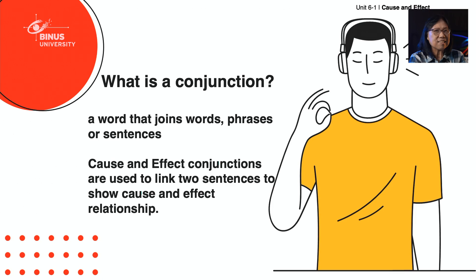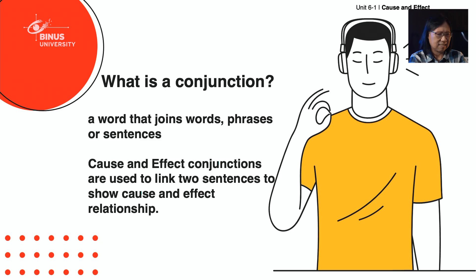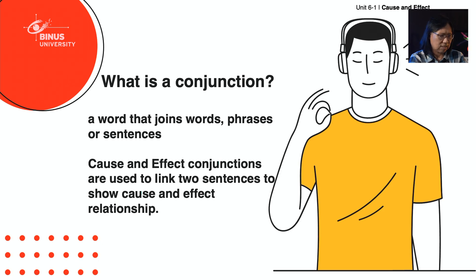What is a conjunction? A conjunction is a word that joins words, phrases, or sentences. There are some types of conjunctions, but in our session today we are dealing with cause and effect conjunctions.